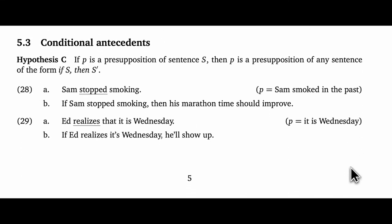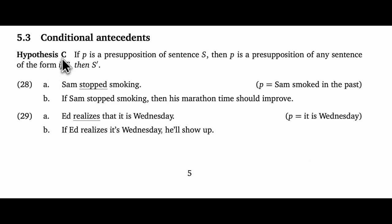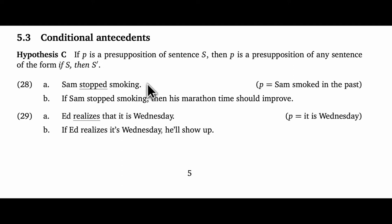Our third test follows the same pattern but is a bit more involved — it focuses on conditional antecedents, the if-clauses in if-then statements. Hypothesis C says: if proposition P is a presupposition of sentence S, then P is a presupposition of any sentence of the form 'if S then S-prime.' The important thing to keep in mind is that you must focus on the if-clause, the antecedent — targeting the then-clause would be doing something very different. Starting with 'Sam stopped smoking' and our target meaning, we create a conditional like 'If Sam stopped smoking, then his marathon time should improve.' This commits the speaker to our target meaning, giving more evidence for our presuppositional analysis of 'stop,' and the same holds for 'realize' and the possessive.